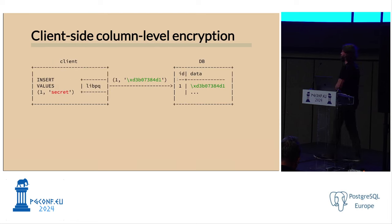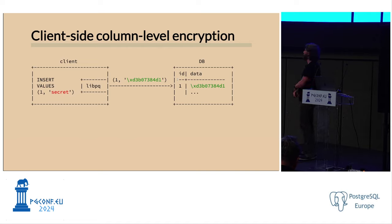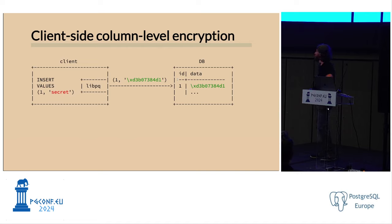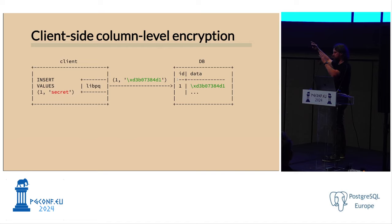The basic scenario I want to achieve is that you have some client application with some secret data — let's use credit card numbers as a motivating example. PCI DSS requires that if you have a credit card number, you have to encrypt it. Ideally you want it encrypted before it even gets to the server, so it's already encrypted on the wire. That's the basic idea.